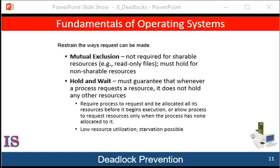Both of these protocols have two main disadvantages. The first disadvantage is that resource utilization may be low, since resources may be allocated but unused for a long period of time — for example, a process may be allocated a mutex lock for its entire execution yet only require that lock for a short period. The second disadvantage is that starvation is possible; a thread that needs several popular resources may have to wait indefinitely because at least one of the resources it needs is allocated to some other thread.